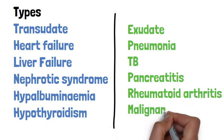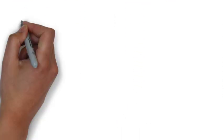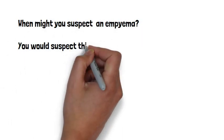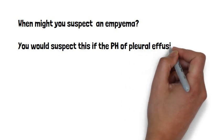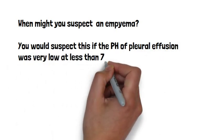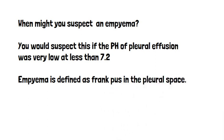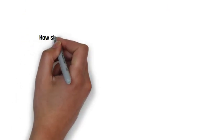So when might you suspect an empyema? Now this is a common exam question. Empyema is defined as frank pus in the pleural space. And you would suspect this if the pH of the pleural effusion was very low, less than 7.2.